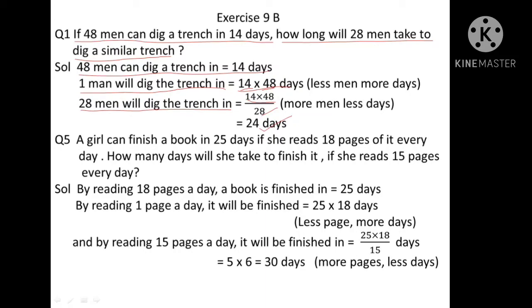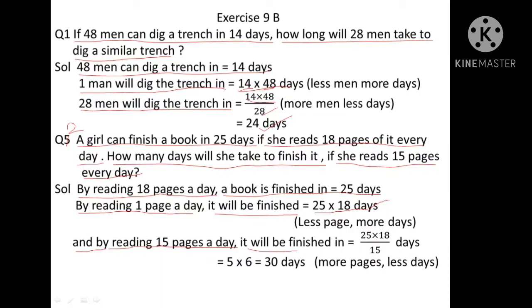Question number 2: A girl can finish a book in 25 days if she reads 18 pages every day. How many days will she take to finish it if she reads 15 pages every day? This is inverse variation, so we multiply. By reading 1 page a day, she would finish in 25 multiplied by 18 days. For 15 pages a day: 25 multiplied by 18 divided by 15 equals 5 multiplied by 6, giving 30 days.